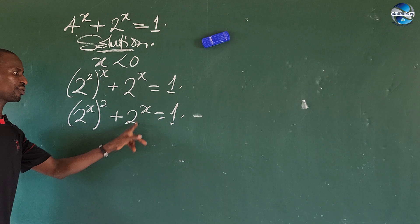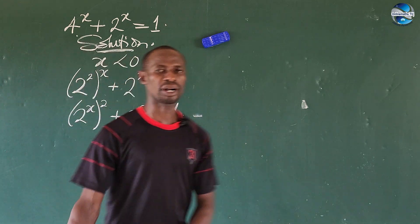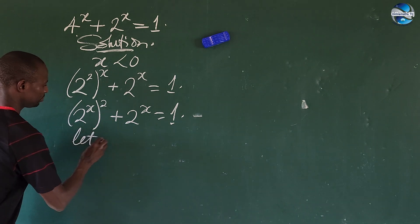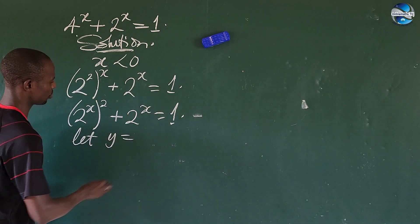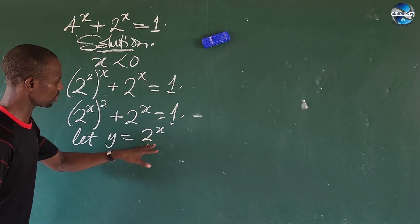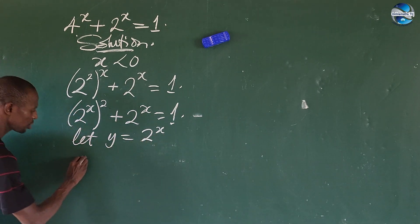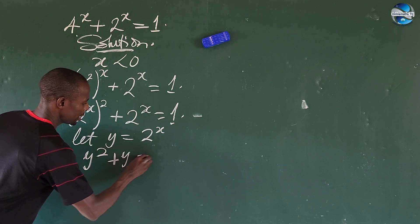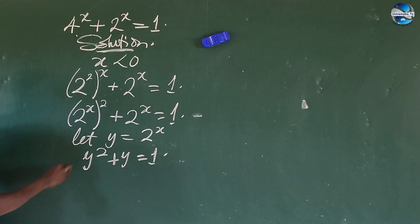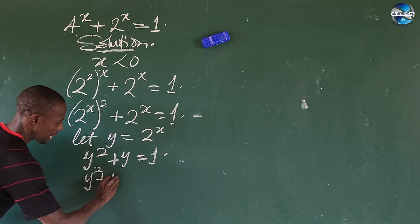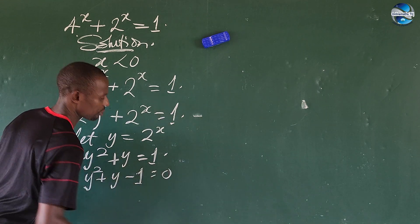We are having 2 to the power of x, 2 to the power of x here, so we can do a substitution. Let y be equal to 2 to the power of x. So wherever we see 2 to the power of x let's put in y there. So we have y to the power of 2 plus y equal to 1. Move 1 to this side so we have y squared plus y minus 1 equal to 0.